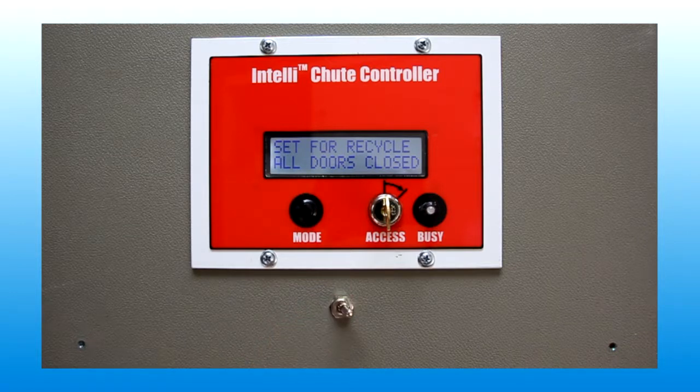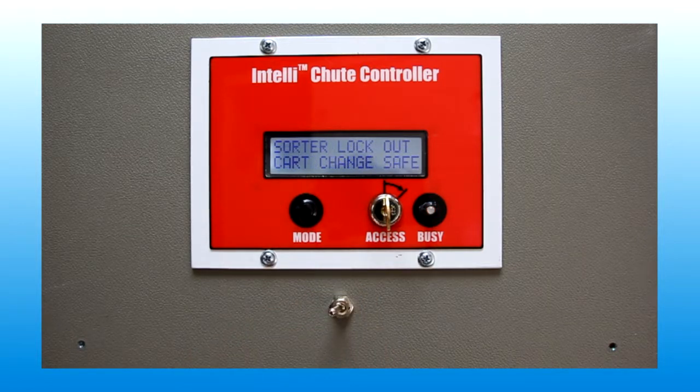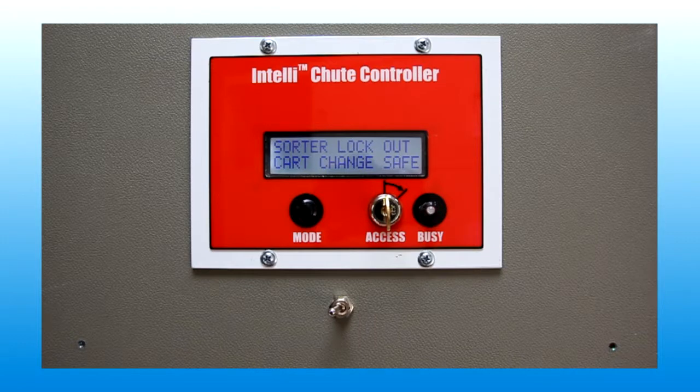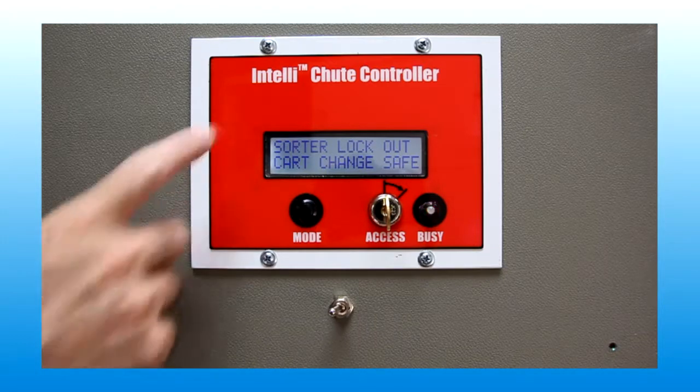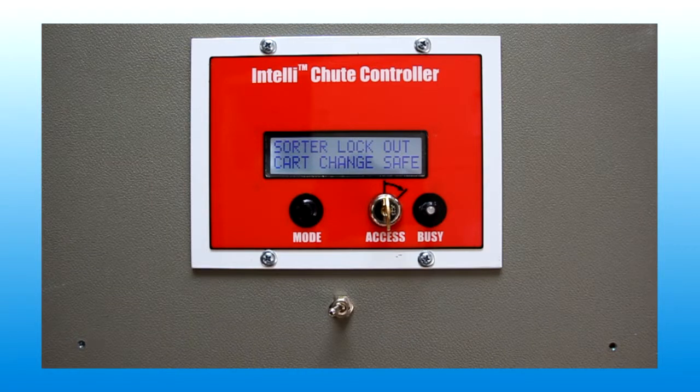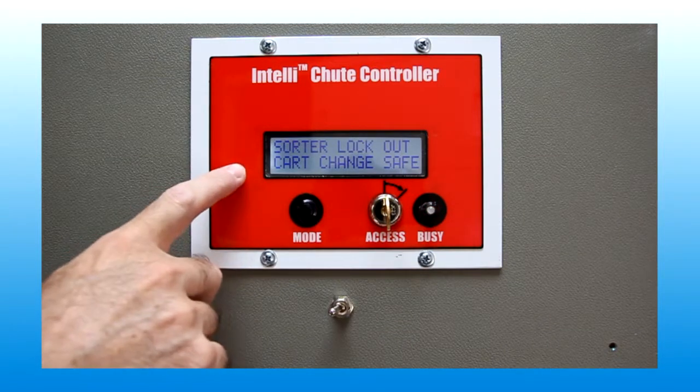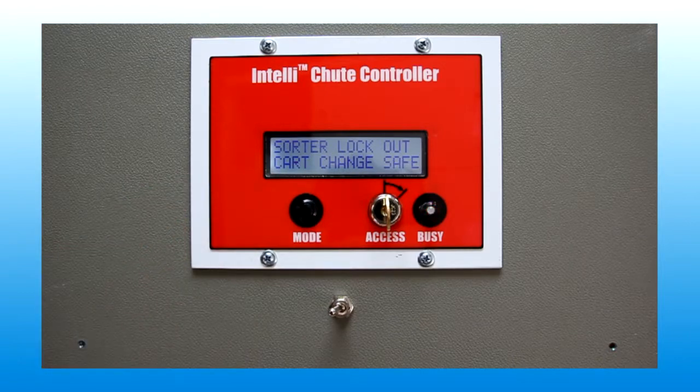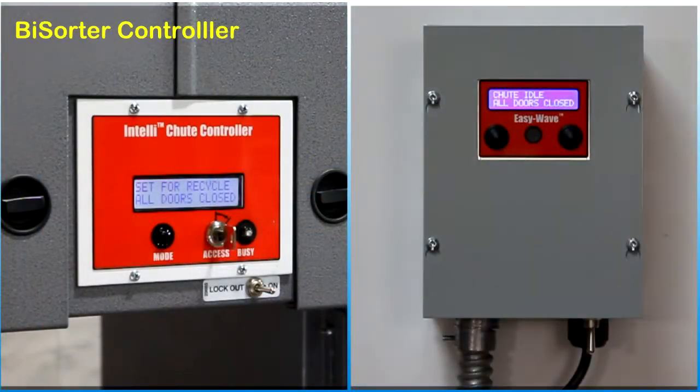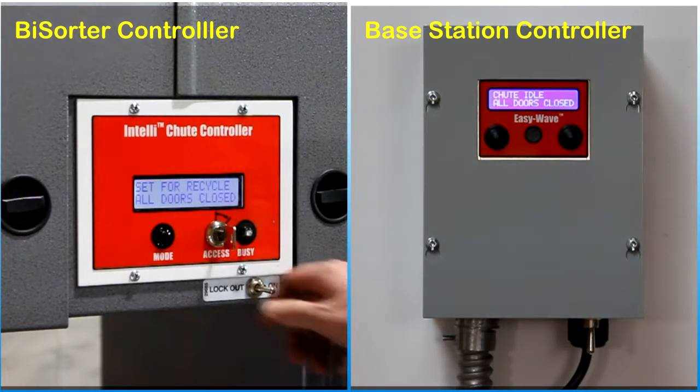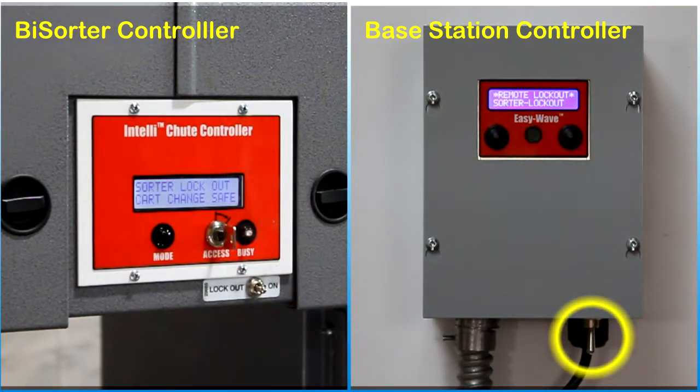Service personnel can use the lockout toggle switch to place the BiSorter control system in lockout mode. All intake doors are locked out in this mode to prevent users dropping waste into the chute at the same time service personnel are interacting with chute equipment. The BiSorter lockout switch will also disable the EasyWave trash chute system in the same manner as the lockout toggle switch on the bottom of the EasyWave base station enclosure. All the same reasons and precautions associated with using the base station lockout switch also apply to using the BiSorter lockout switch.